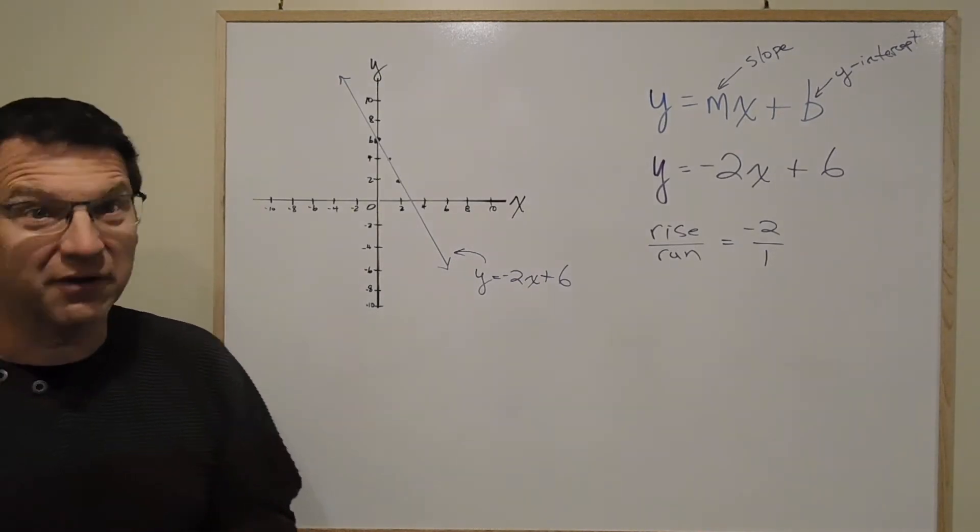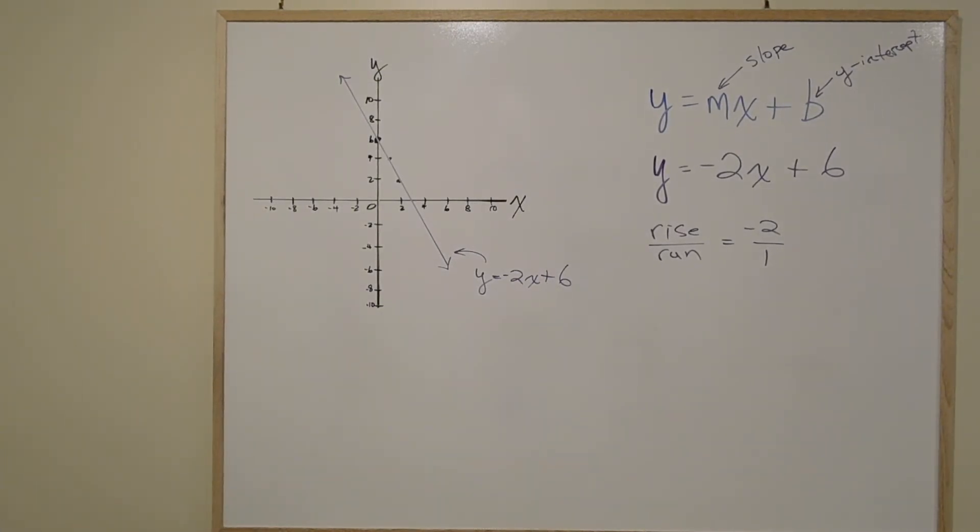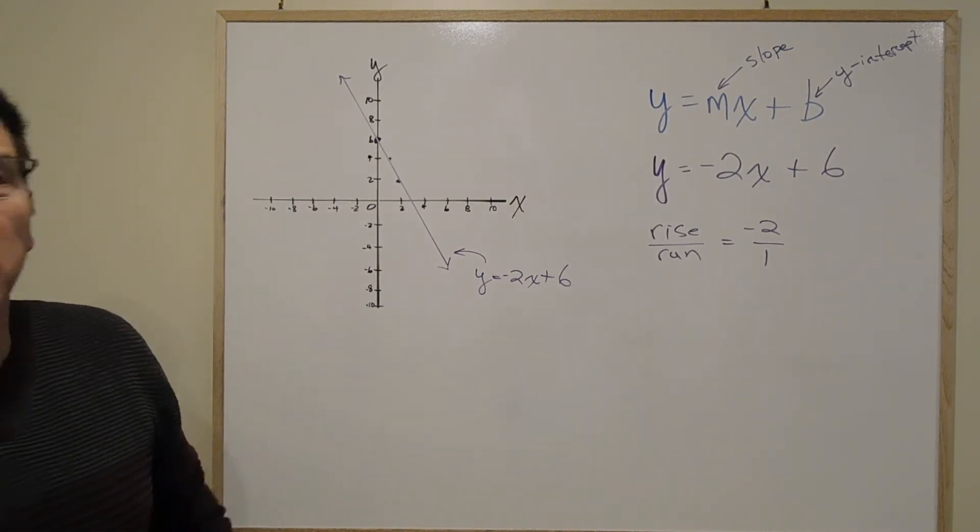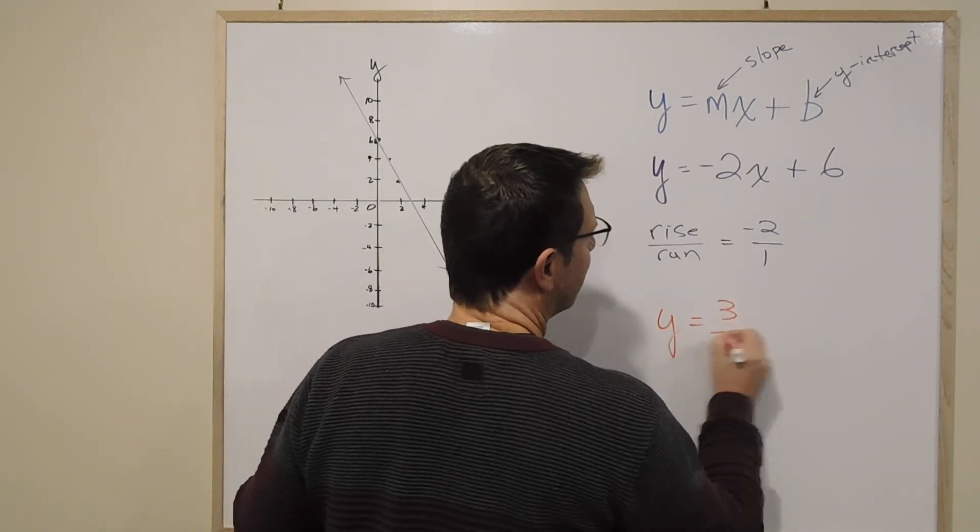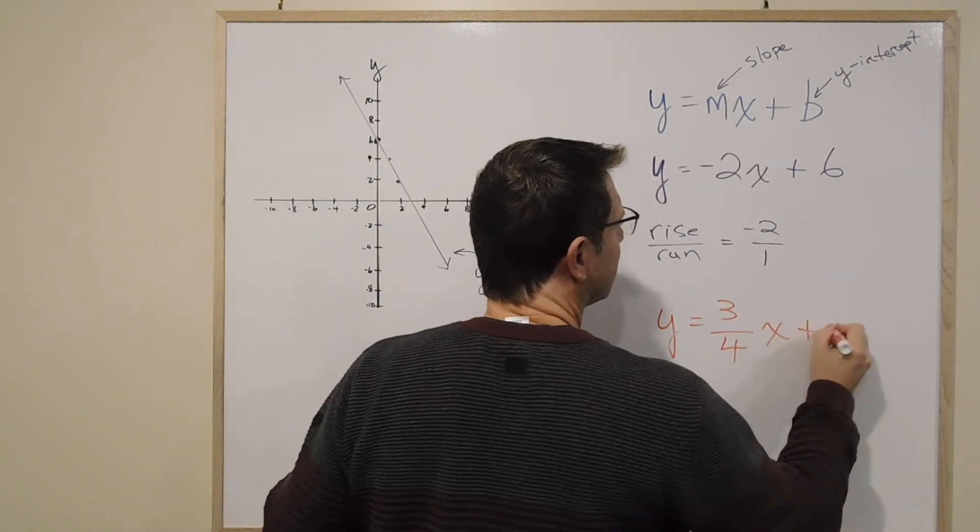Let's take a second and try to do the other one. The other one, let's get some red out, is y equals 3 quarters x plus 1. So we'll do this one in red. Y equals 3 quarters x plus 1.